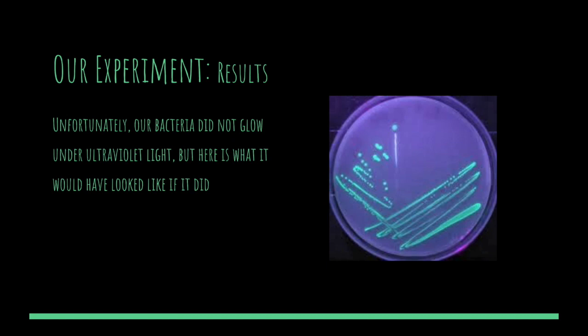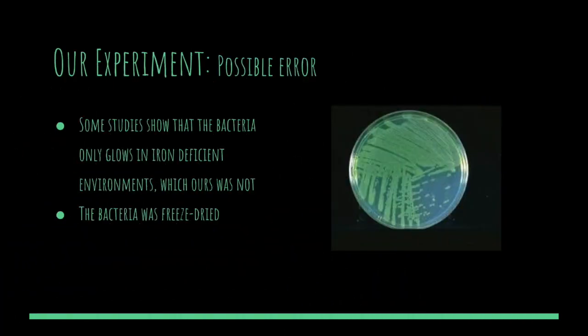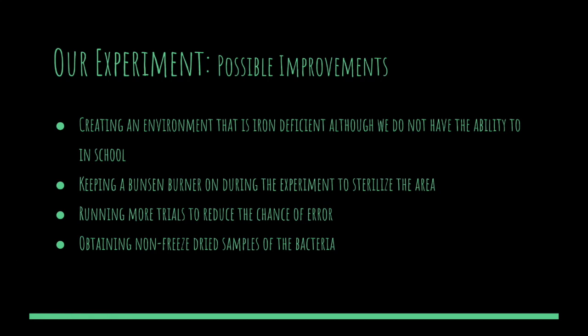To the right is a picture of what Pseudomonas fluorescens should look like under ultraviolet light. We tried to investigate why our bacteria did not glow, and we came across some studies that showed Pseudomonas fluorescens only glows under iron-deficient conditions, which our environment did not adhere to — this may have resulted in our bacteria not glowing. In addition, the bacteria was freeze-dried, which may have caused it to behave differently. Possible improvements include keeping a Bunsen burner running during the experiment to sterilize the area, running more trials to reduce error, obtaining non-freeze-dried samples, and creating an iron-deficient environment.